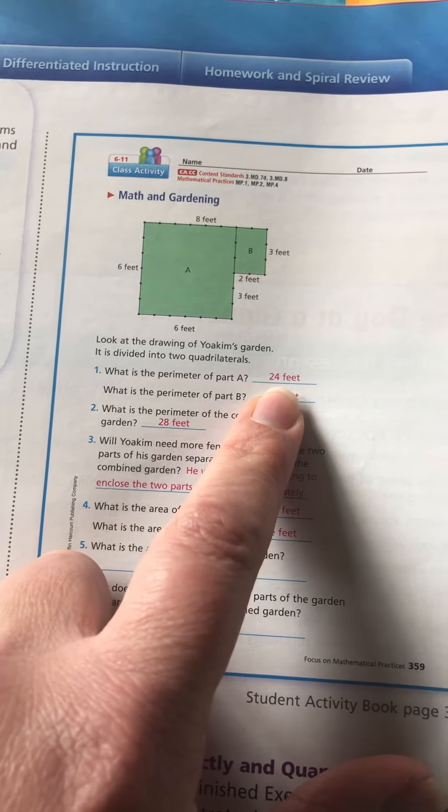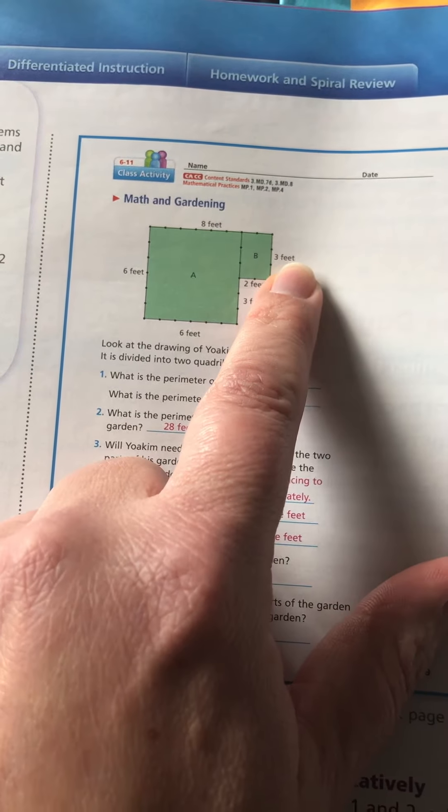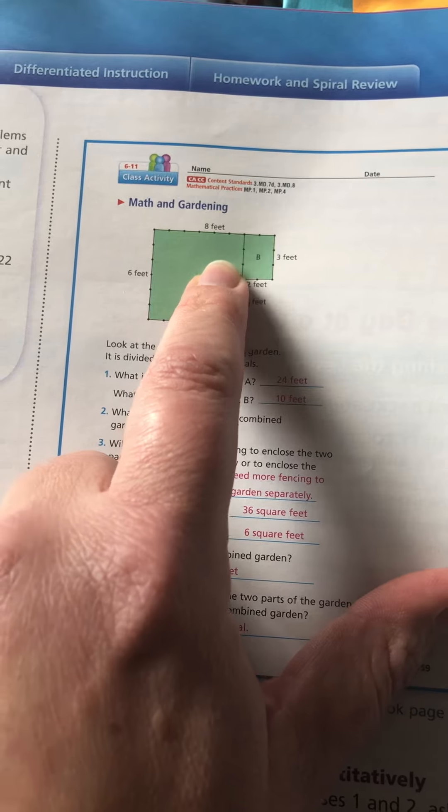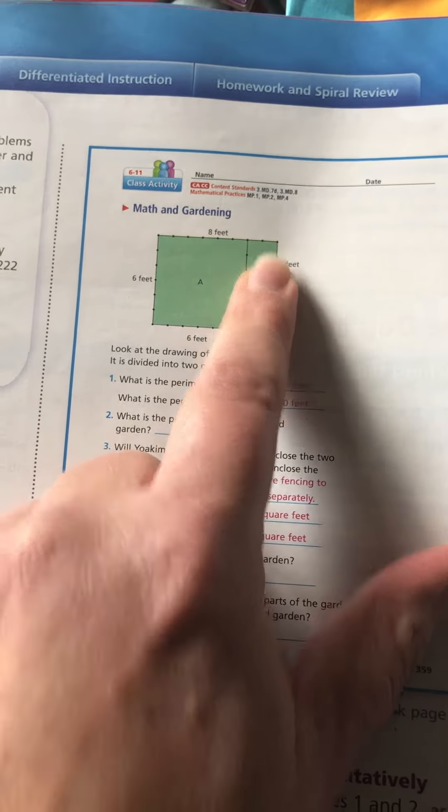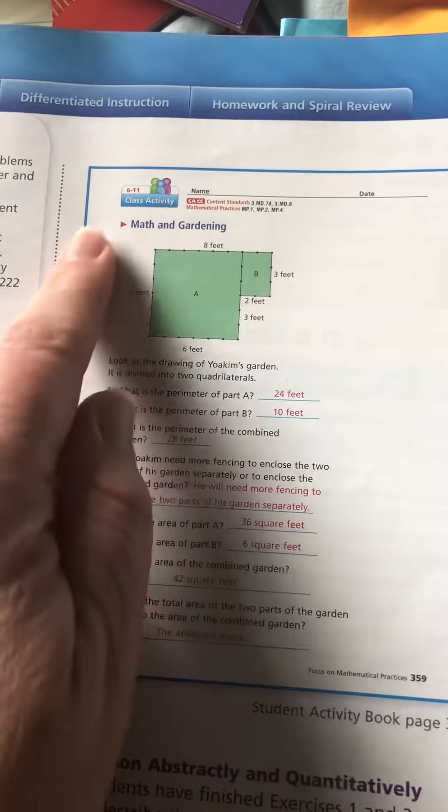The perimeter for part B would be three, and we'd assume this is also three, and two and two, which would give us ten feet. The perimeter of the combined garden, so all the way around this entire shape, would be 28 feet.